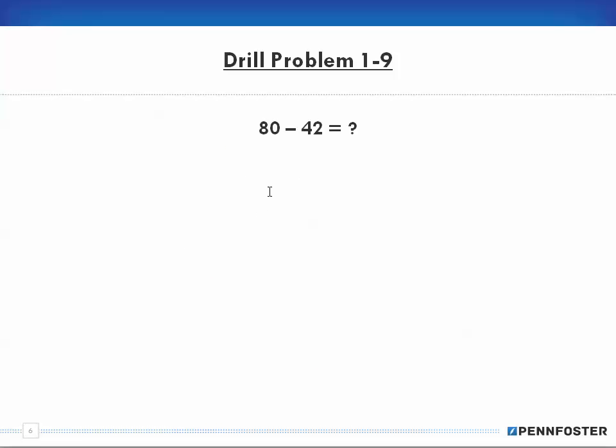Problem 1-9. 80 minus 42. 2 from 0, we have to borrow. So this is the 10 spot, so we're going to borrow 10. Now this becomes 7, and we add the 1 here. We borrowed 1 ten. So now I have 10. 2 from 10 is 8, and then 4 from 7 is 3. The answer is 38.